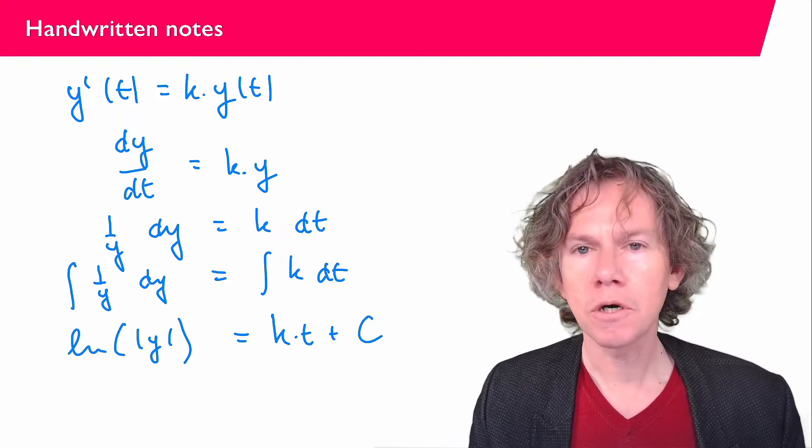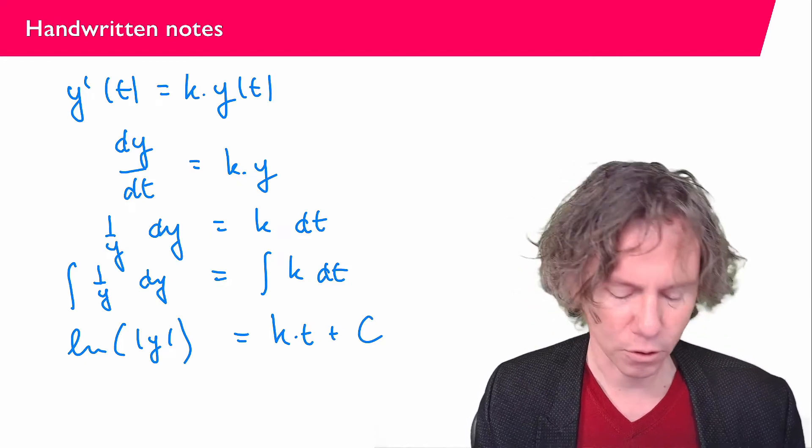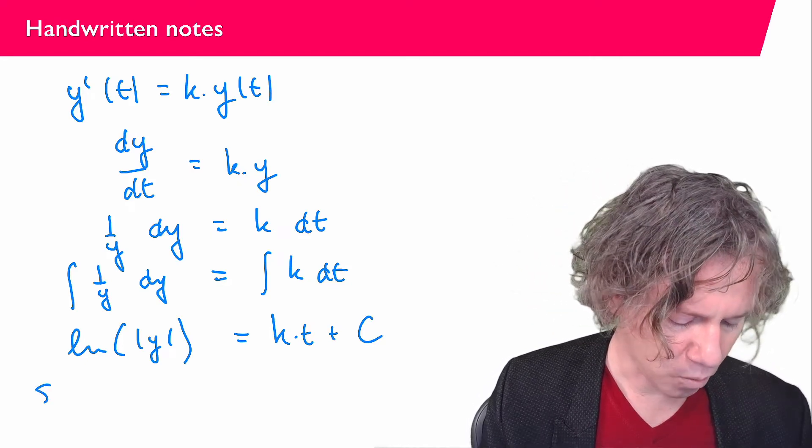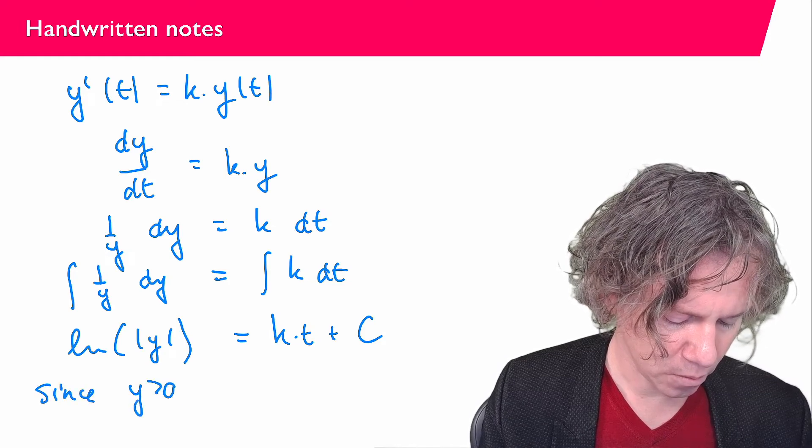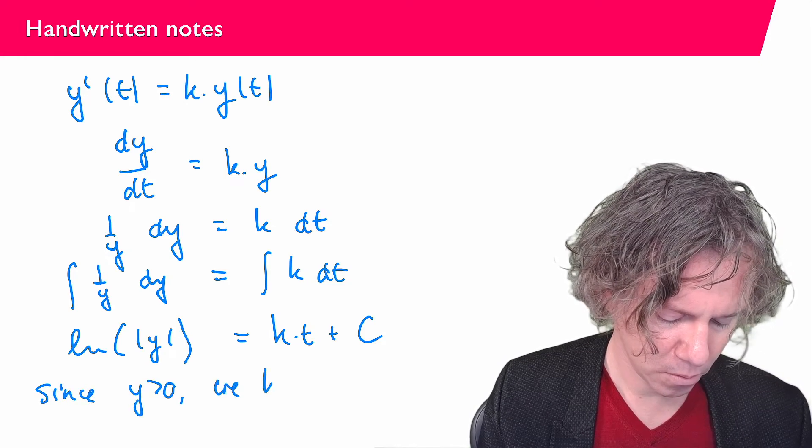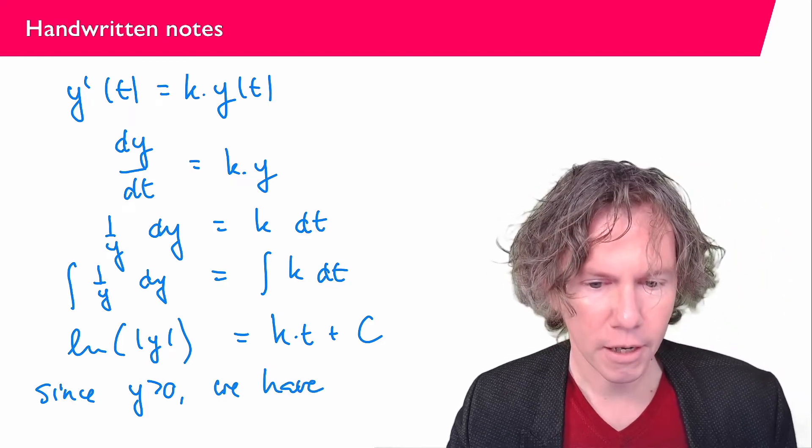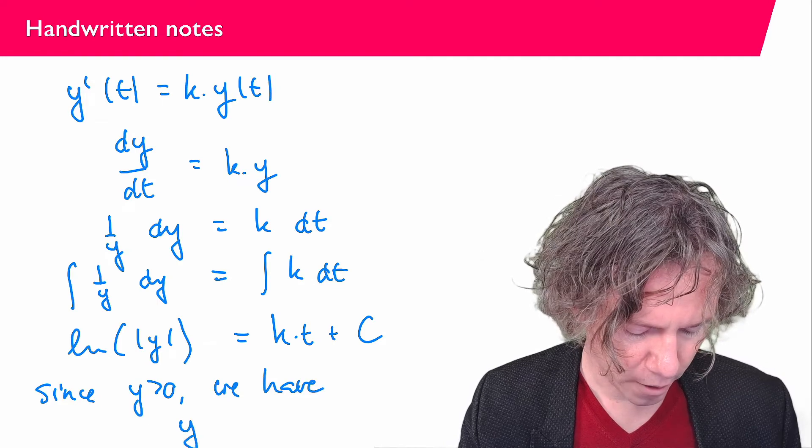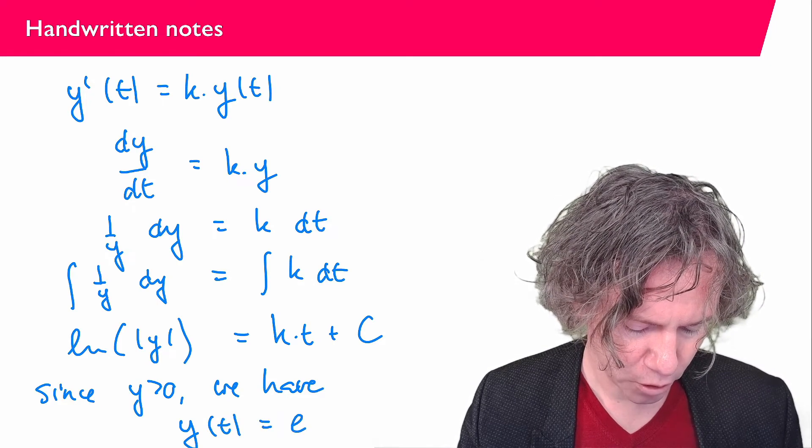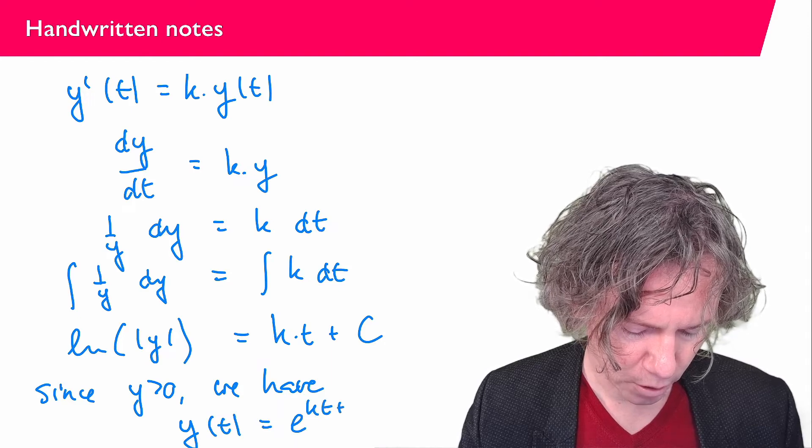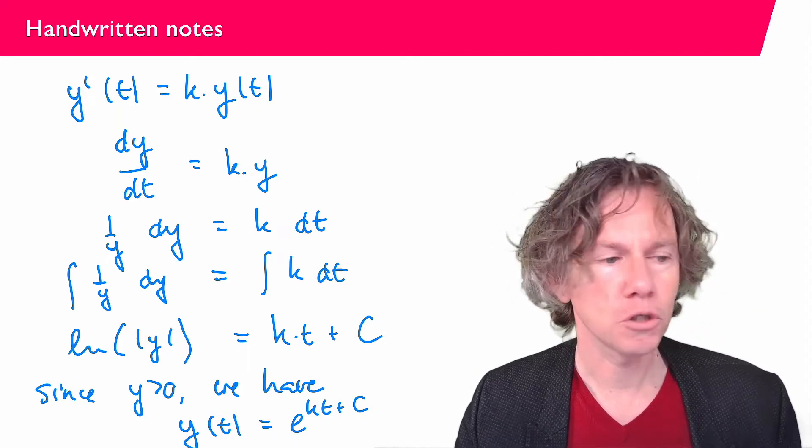Now since we are considering an amount, a mass of a certain quantity, I know that y is larger than zero. I can take the exponential and I find that y(t) is the exponential of kt plus the integration constant, and I can split that.